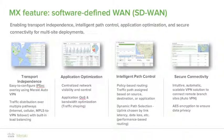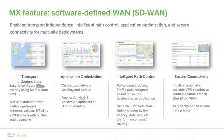No waiting for users to call up and complain about voice quality, no manual intervention — this is intelligent path control. From a security perspective, the overlay VPN isn't just providing a virtualized transport, it's also a secure encrypted tunnel. This gives you the comfort that your private corporate data can traverse the public internet without any fear of compromise.